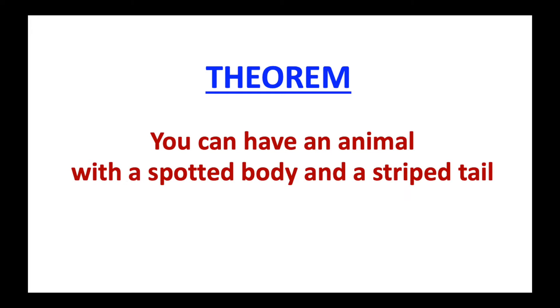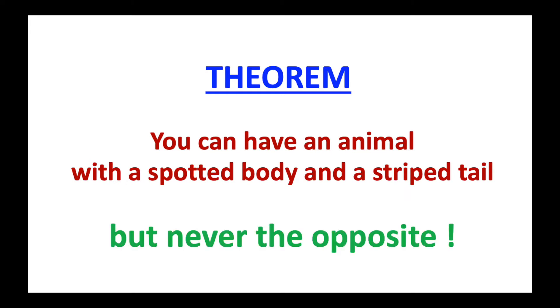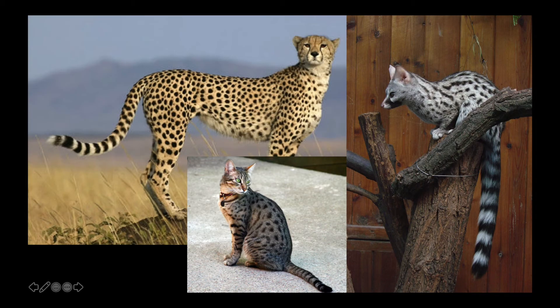You can have an animal with a spotted body and a striped tail, but never the opposite. Exactly what we observe in nature — for example, the cheetah, the genet, and some cats.